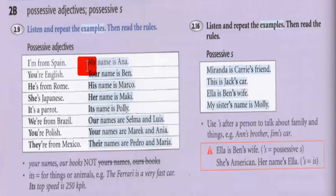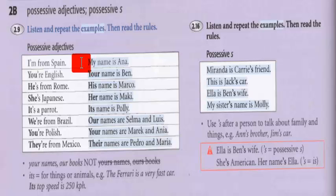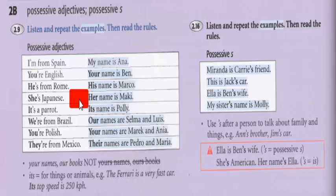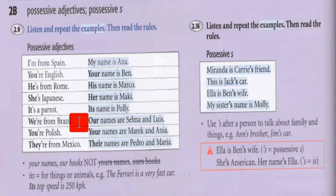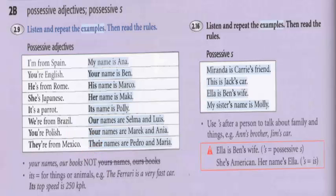Now, at the list, we have the possessive adjectives também, in bold. Então, we start. My name is Anna. Your name is Ben. His name is Marco. Her name is Maki. Its name is Polly. Our names are Selma and Luis. Your names are Mark and Anya. Their names are Pedro and Maria.